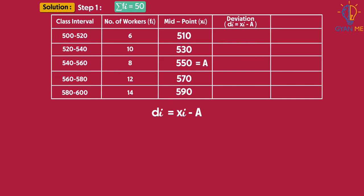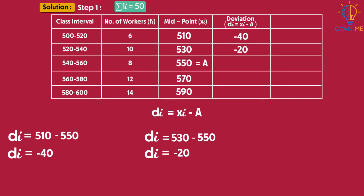In our table, for the first class, di is 510 minus 550, which equals minus 40. For the second class, it will be 530 minus 550, which is minus 20. And so on, we can calculate values of di and list them in the next column.